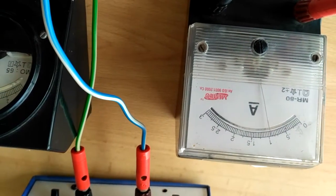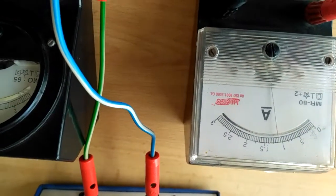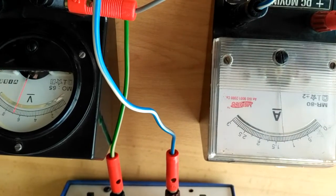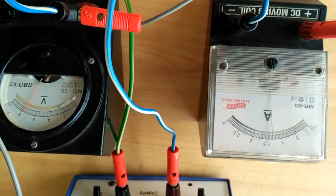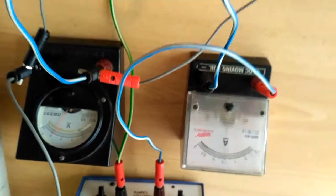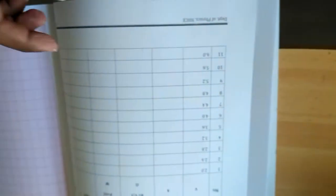As you can see here, as you are varying the voltage, the current is also varying. We will note down the respective values of current. Once that is noted down, the rest is your calculations.